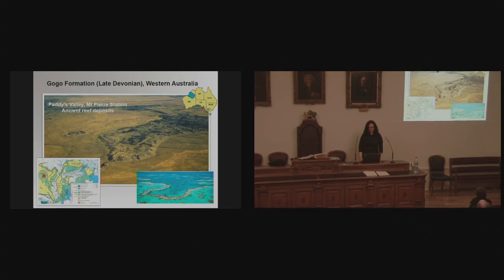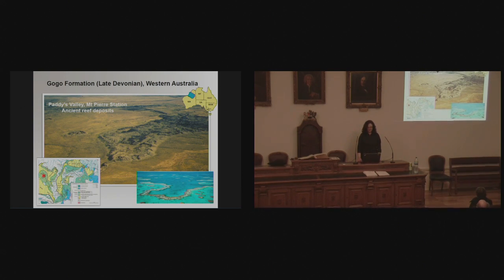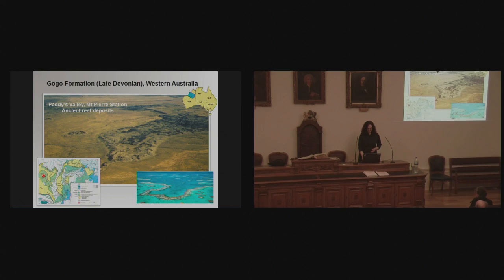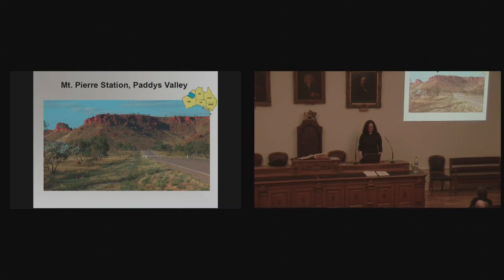I do have several photos from the Gogo locality in Western Australia, because I've been lucky enough to go to Australia twice to collect fossil fish from this locality. Here's an aerial view of the Gogo Formation, which is late Devonian age in Western Australia. The general locality is shown in the inset in blue. The Gogo Formation represents an ancient reef deposit, something like we see in the Great Barrier Reef today.